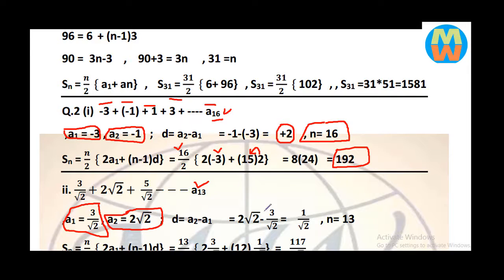We need to find common difference here: a2 minus a1. Putting the values: 2 square root 2 minus 3 over square root 2. Taking LCM as square root 2, the square root 2 squared becomes 2 times 2 equals 4, so 4 minus 3 equals 1 over square root 2.